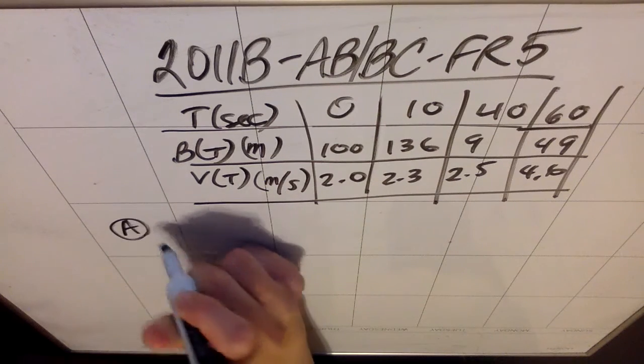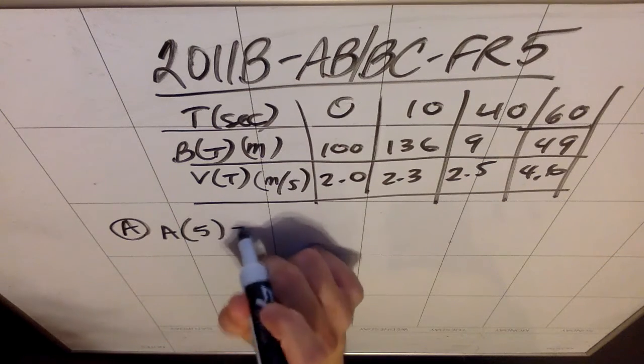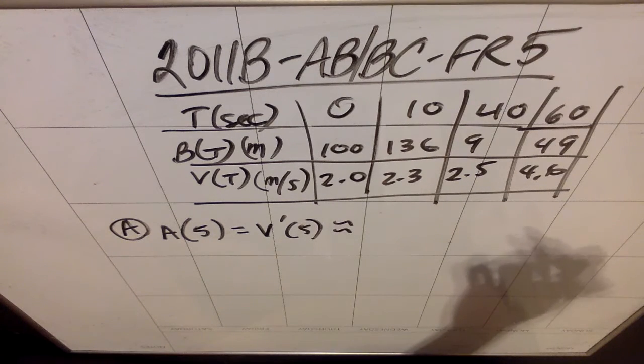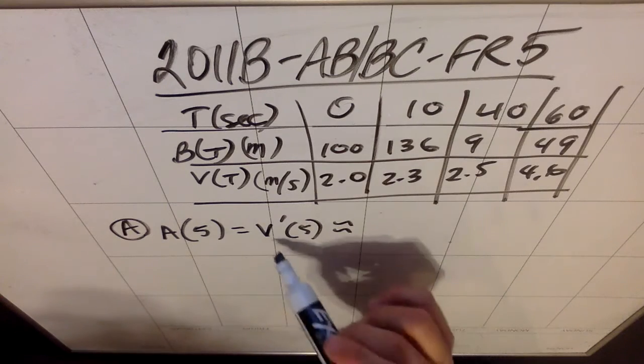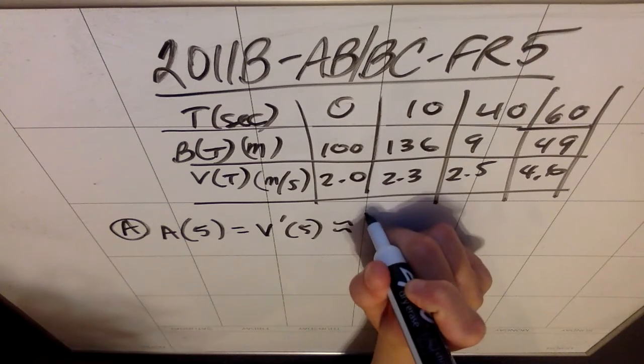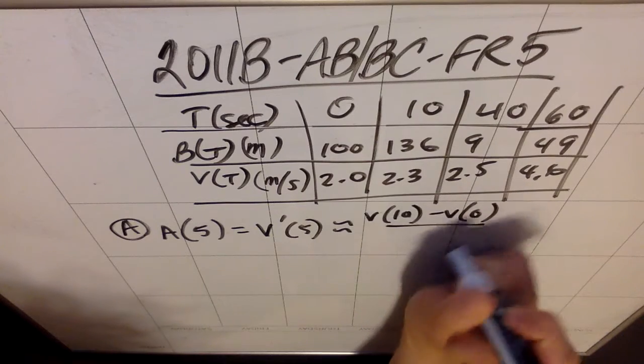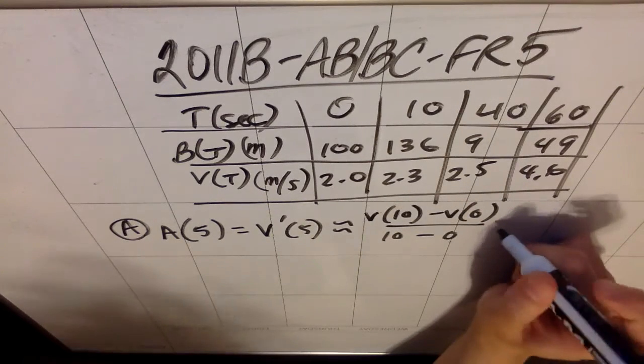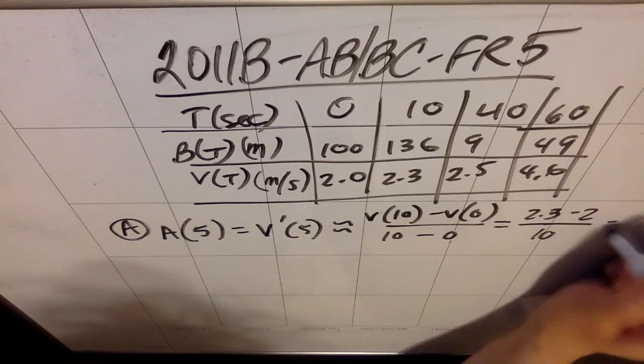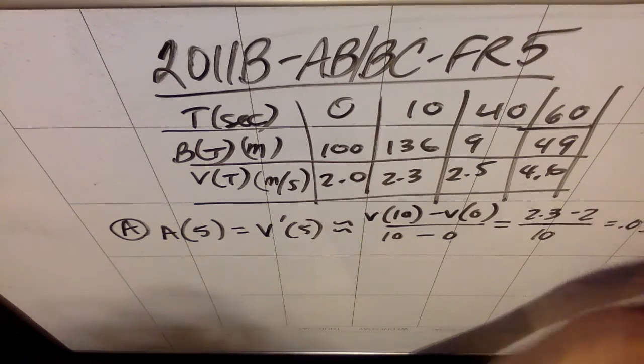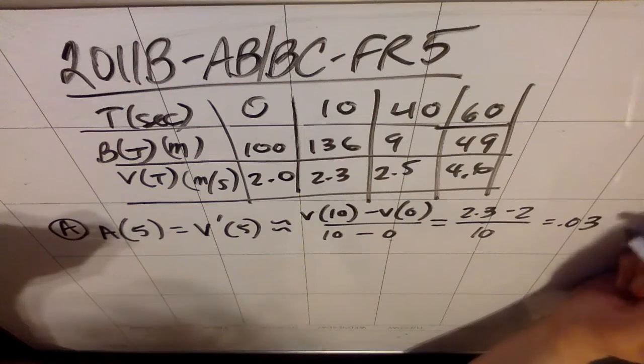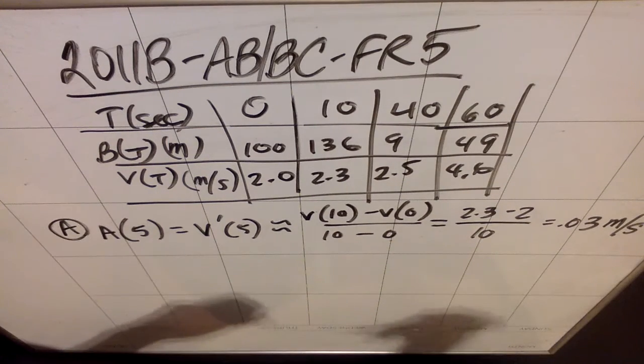Part A asks me to approximate a(5), which is the same as v'(5). If I were trying to find the approximate slope at 5, what I'd have to do is use two points around 5. Well, the only two points that are even possibly credibly around 5 are 0 and 10. So I'm going to use V(10) minus V(0) over 10 minus 0. That's going to be 2.3 minus 2 all over 10, which would be 0.3 divided by 10, so that's 0.03. Because v is meters per second, this is meters per second per second, or the way you'll usually see that is meters per second squared.